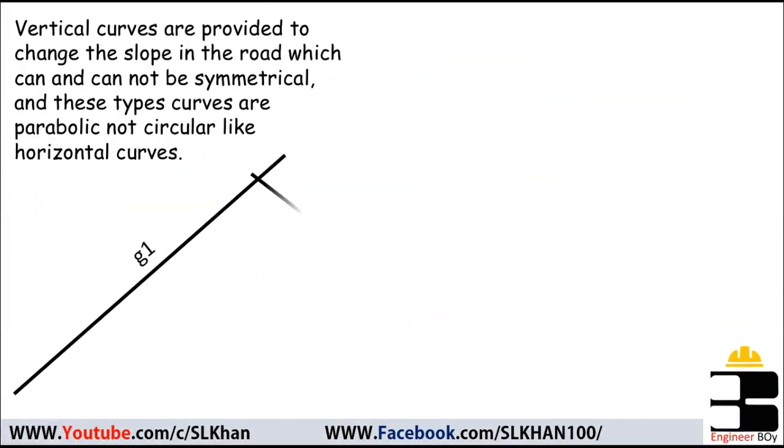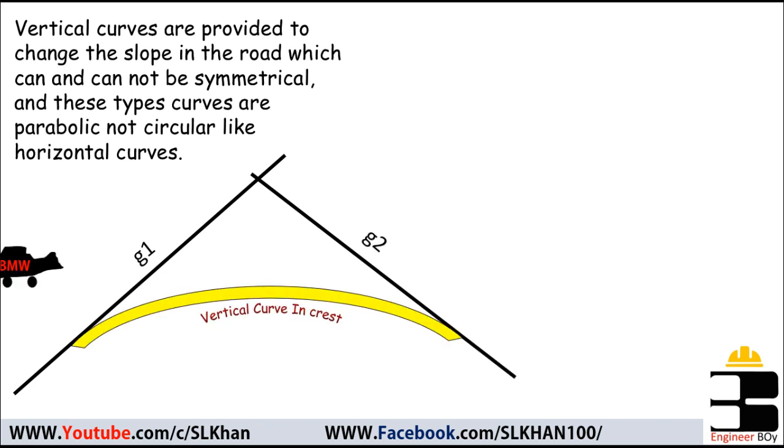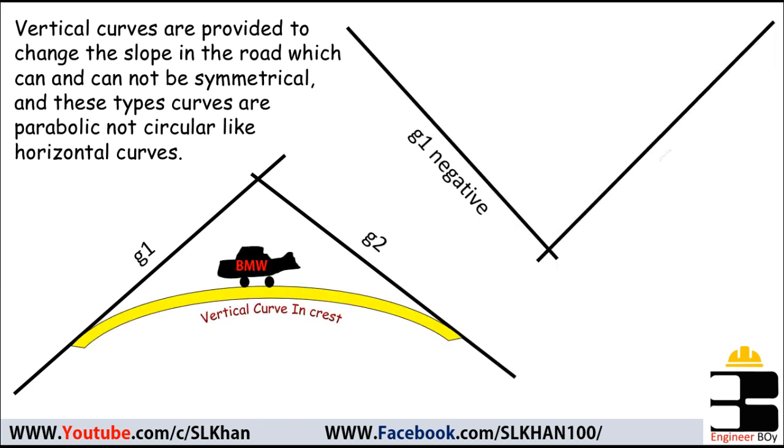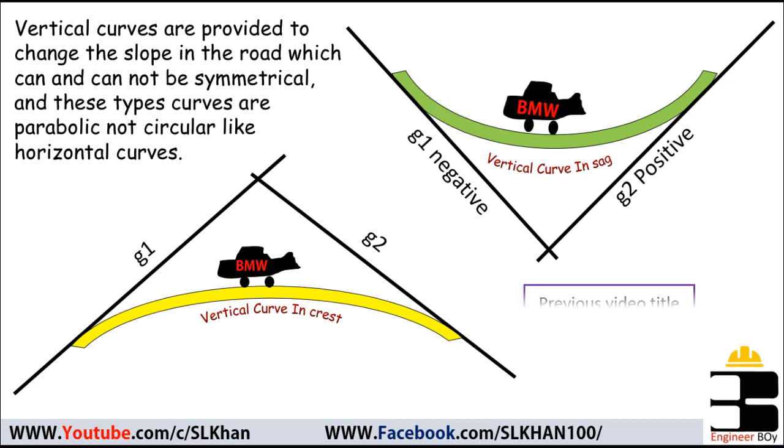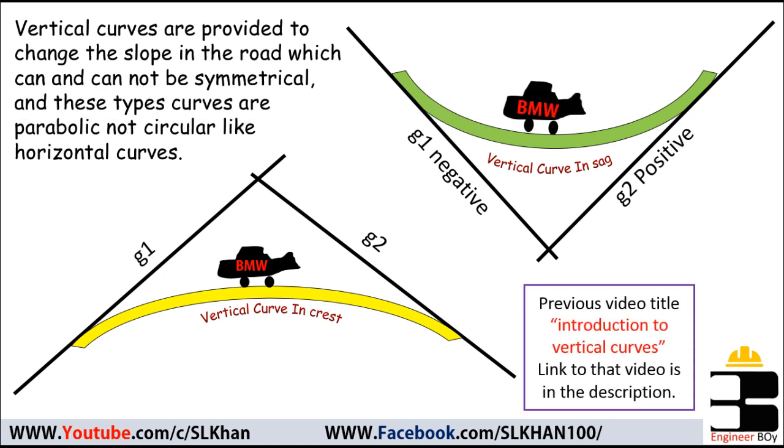Previously we have learned that vertical curves are provided to change the slope in roads, which can be symmetrical or asymmetrical. These curves are parabolic, not circular like horizontal curves. If you have not watched the previous video, I recommend watching that first as an introduction to vertical curves. Link to that video is down below in the video description.